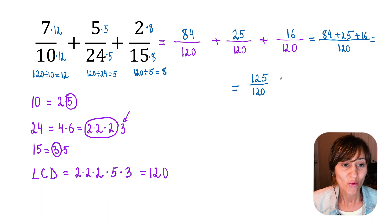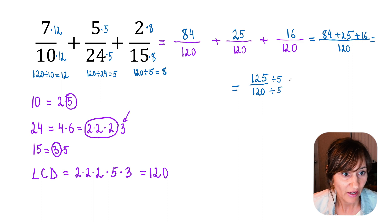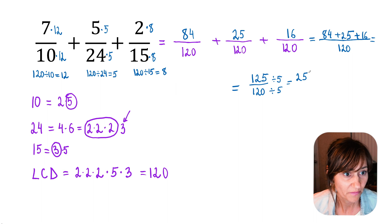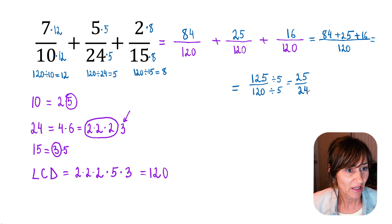But do not stop! We can reduce this fraction by 5. So 125 divided by 5 and 120 divided by 5: 125 divided by 5 is 25 and 120 divided by 5 is 24. We stop here because this fraction cannot be simplified anymore.